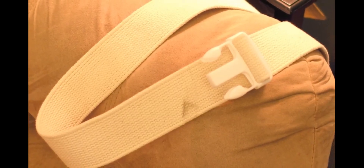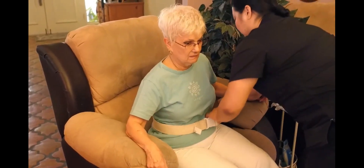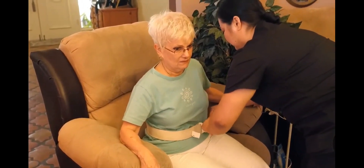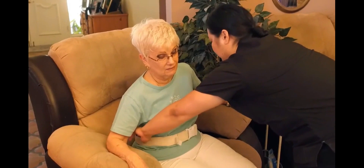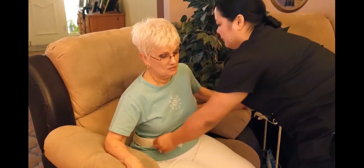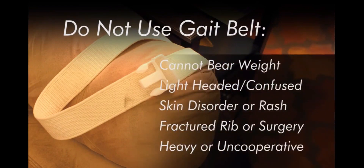A gait belt fits around the client's waist and provides a firm grasping surface, enabling the caregiver to assist with transferring a client who is partially dependent but able to bear weight. The belt should be tightened so you can fit two fingers between the belt and the client. Ensure a layer of clothing is between the client and the belt to reduce the chance of abrasion. Gait belts should not be used on clients who cannot bear their own weight, feel lightheaded or confused, have a skin disorder or rash in the trunk area, have or recently had a fractured rib, recent surgery, or severe heart or respiratory disease. Gait belts may not be suitable for use with heavier or uncooperative clients.